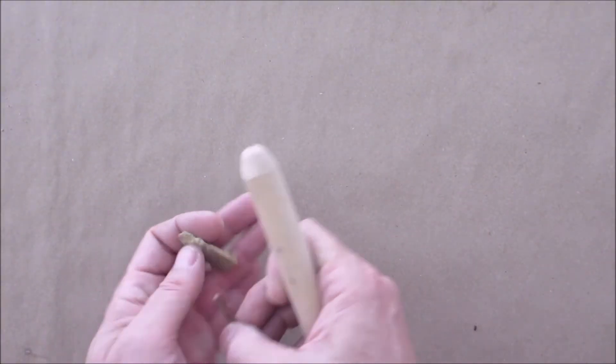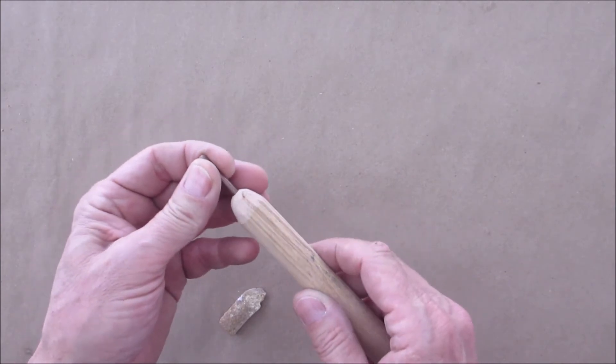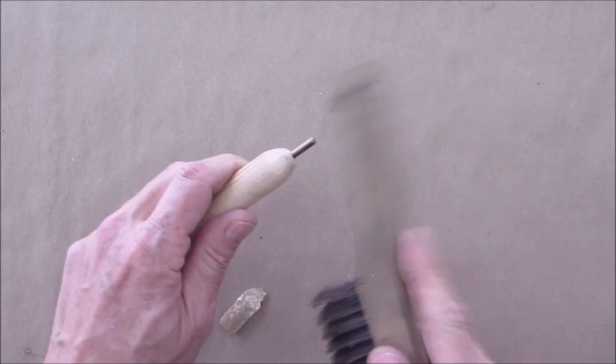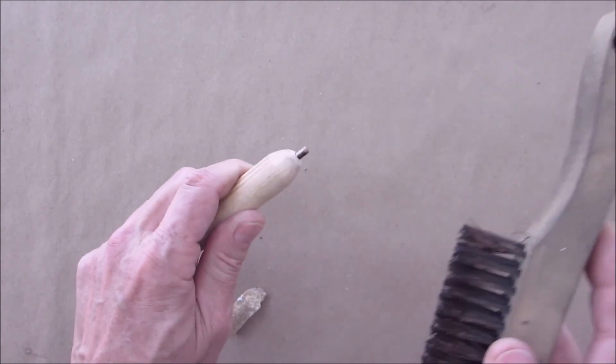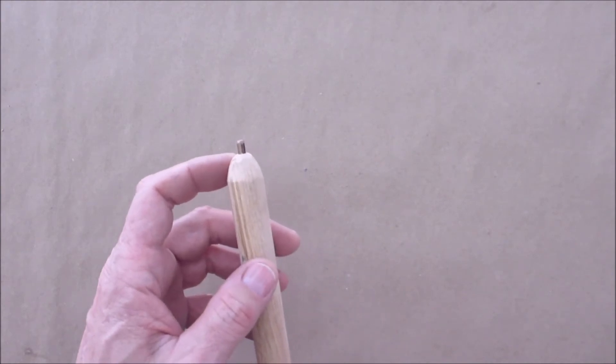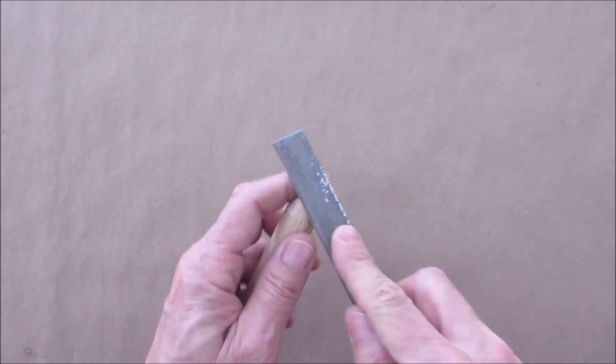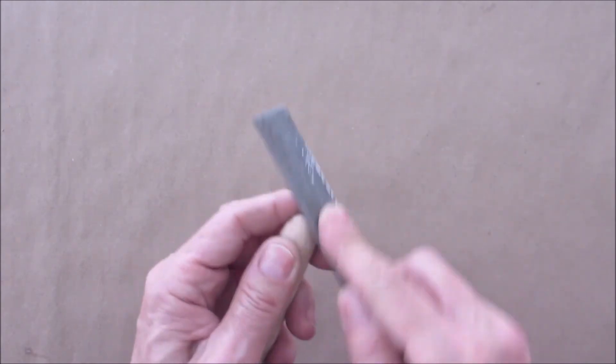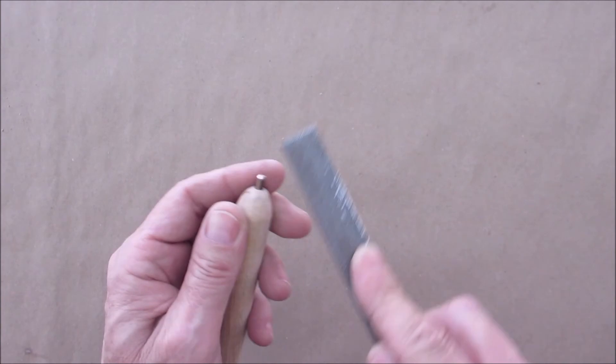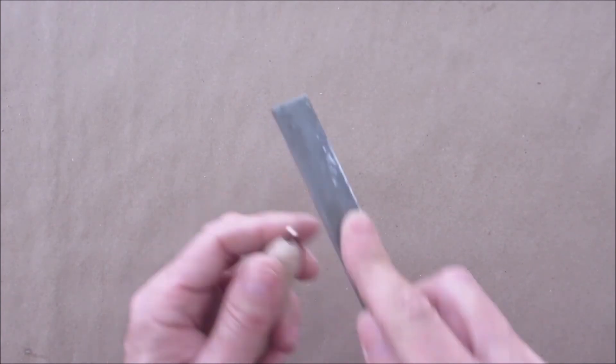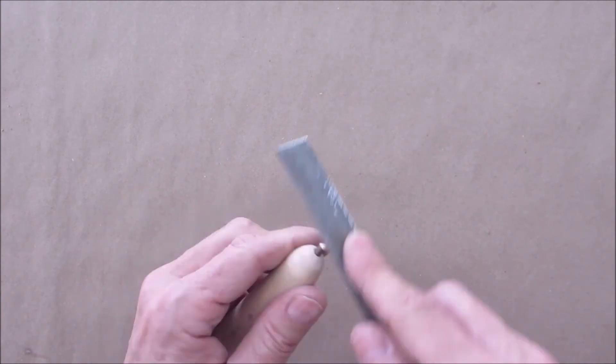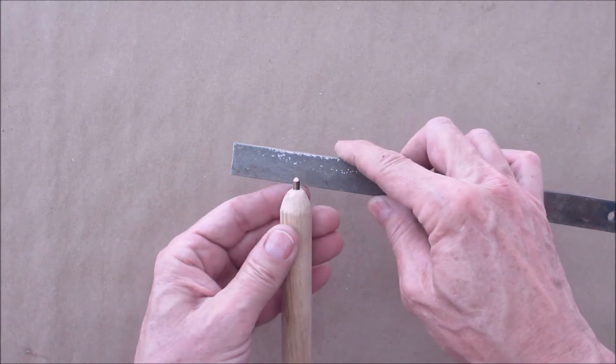Next you're gonna get your piece of copper and place it into the hole. Just get yourself a piece of wood or something and tap that in till you have about a quarter of an inch left out. Get yourself a little metal file and start rounding that off. It's got a nice little dome shape to it.